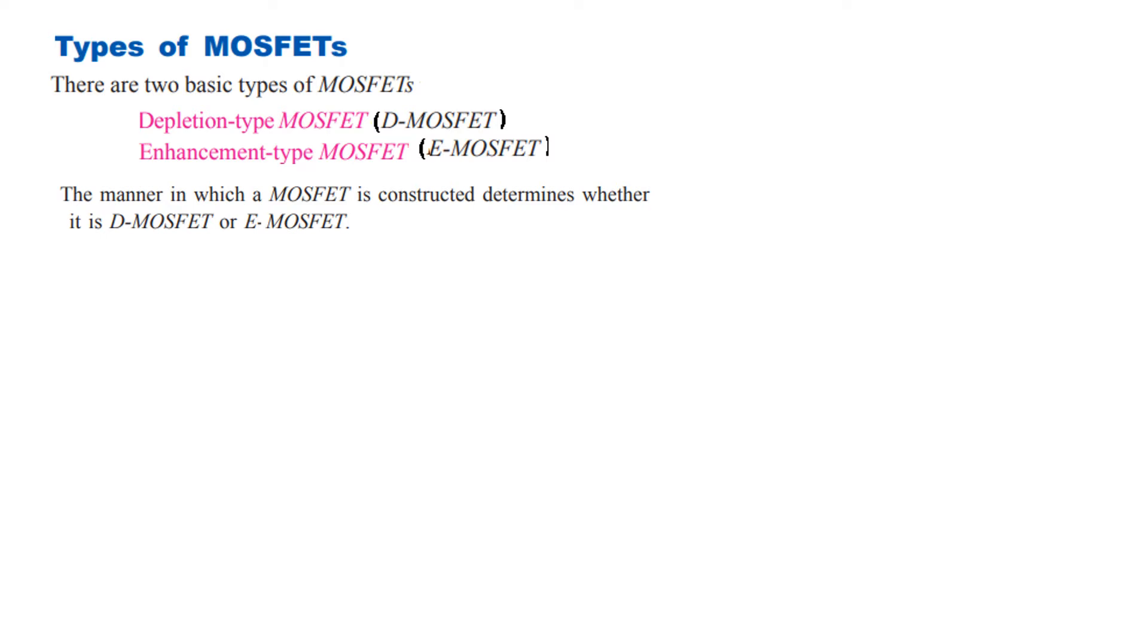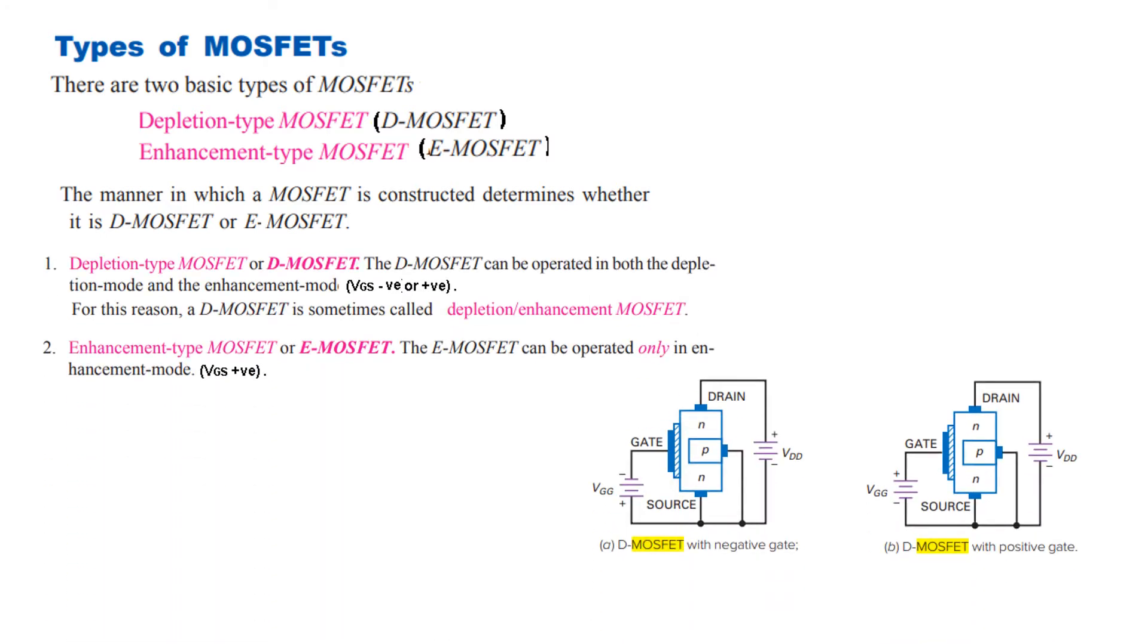And the manner in which a MOSFET is constructed determines whether it is a D-MOSFET or E-MOSFET. Then there is another difference that the depletion MOSFET or D-MOSFET can be operated in both the depletion mode or enhancement mode. That means in case of a depletion MOSFET the gate voltage can be negative as well as positive. But in case of enhancement MOSFET it can only be positive.